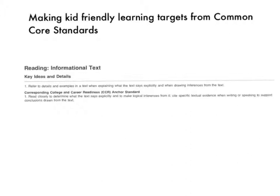The first thing I want us to do is to break down the standard a little bit. I'm going to highlight some of the nouns in the standard in yellow, like details, examples, text — text is there a couple of times — and inferences. Those are important words.